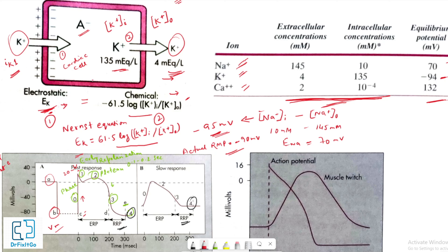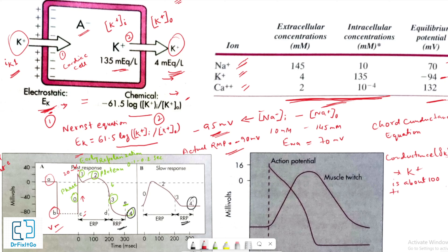Nevertheless, this small inward current of sodium ions is sufficient to cause the potential on the inside to be slightly less negative than the value predicted by the Nernst equation for potassium alone. The dependence of resting potential on the conductance and on the intracellular and extracellular concentrations of potassium, sodium, and other ions is described by the chord conductance equation. This equation reveals that the relative — not absolute — membrane conductance to sodium and potassium ions determines the resting potential. In the resting cardiac cell, the conductance to potassium ions is about 100 times greater than the conductance for sodium ions.